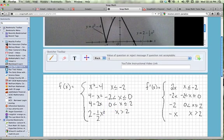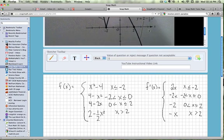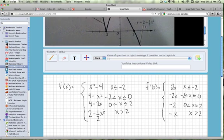And then from 2 to positive infinity, our function is defined as 2 minus 1 half x squared.